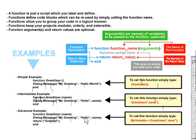We've declared it as a function called greetUser, and we're going to activate a dialog message box which says 'my greeting, hello,' and then the person's name. And in this particular case, it's going to return the value 'greeted' to our main script — so we could use that later on to see if this person has been greeted or not.